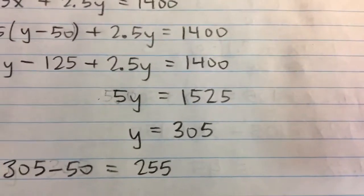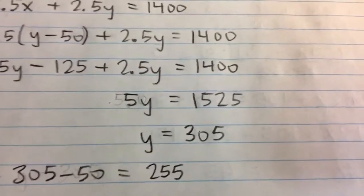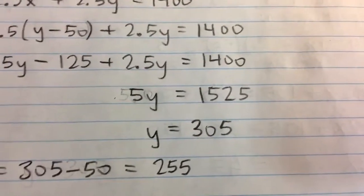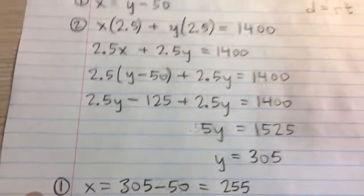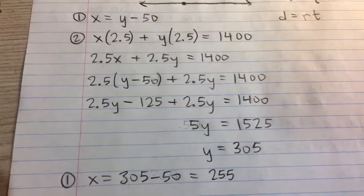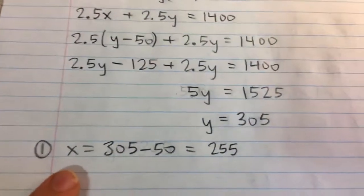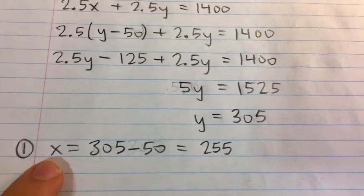And so the speed of the second plane, which we'll remember is the faster plane, is 305 miles per hour. And because of the first equation, x equals y minus 50, we can find the speed of the slower plane or x,